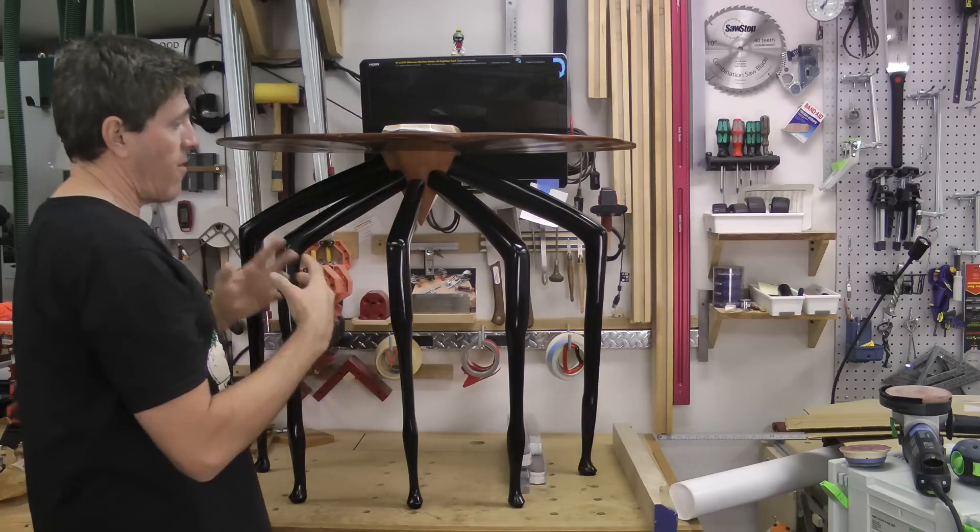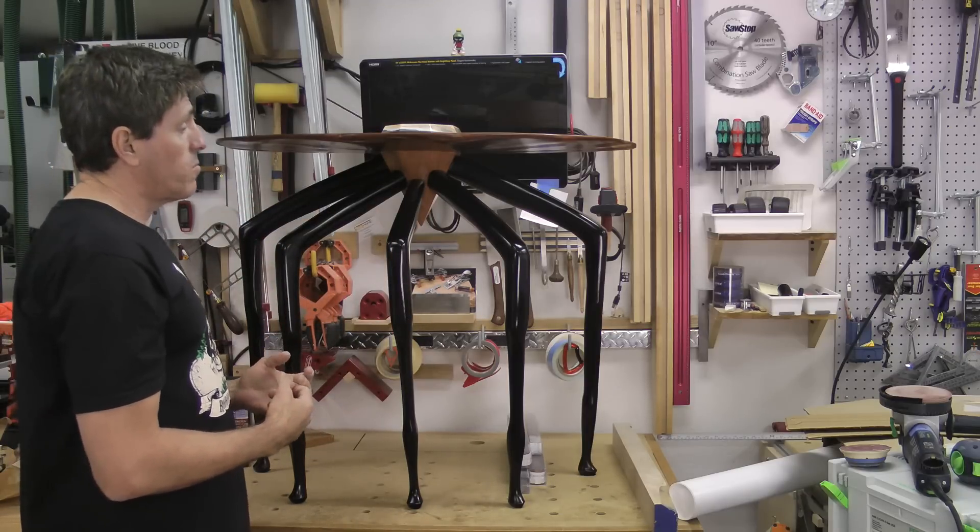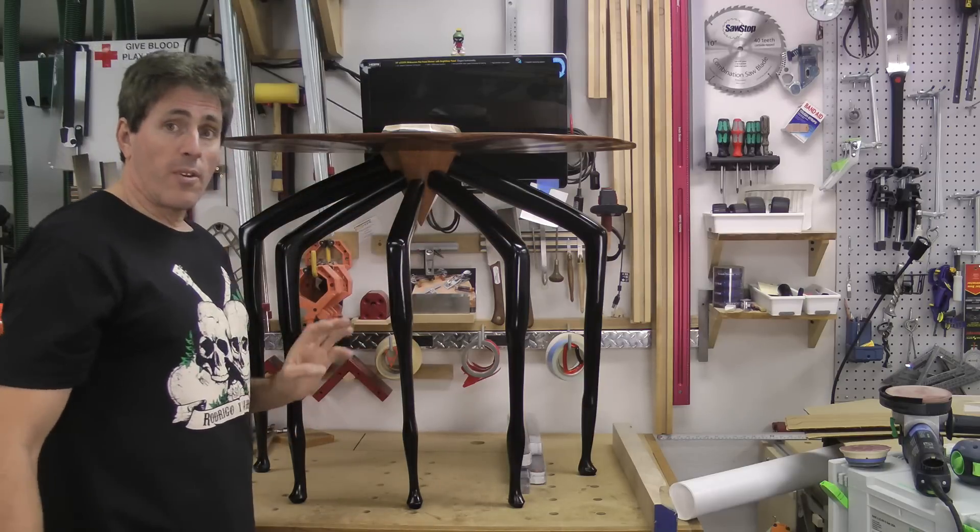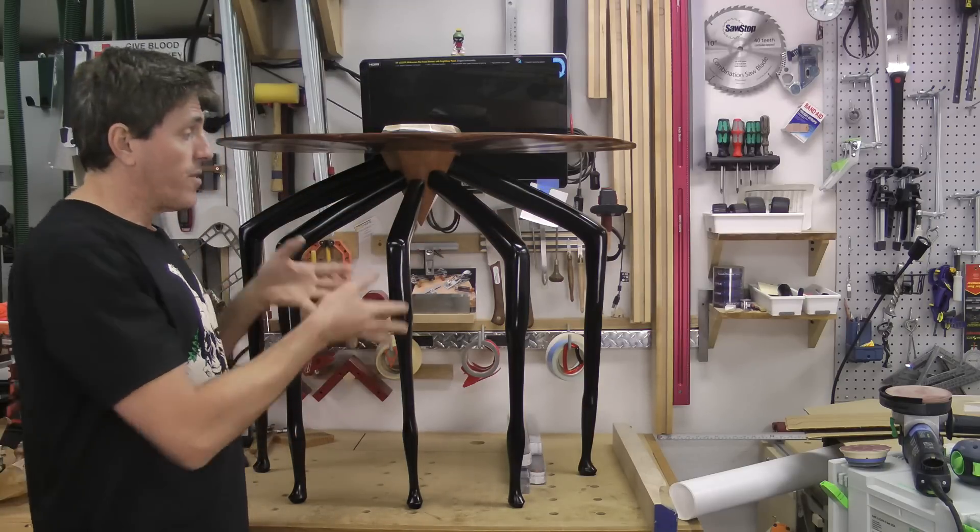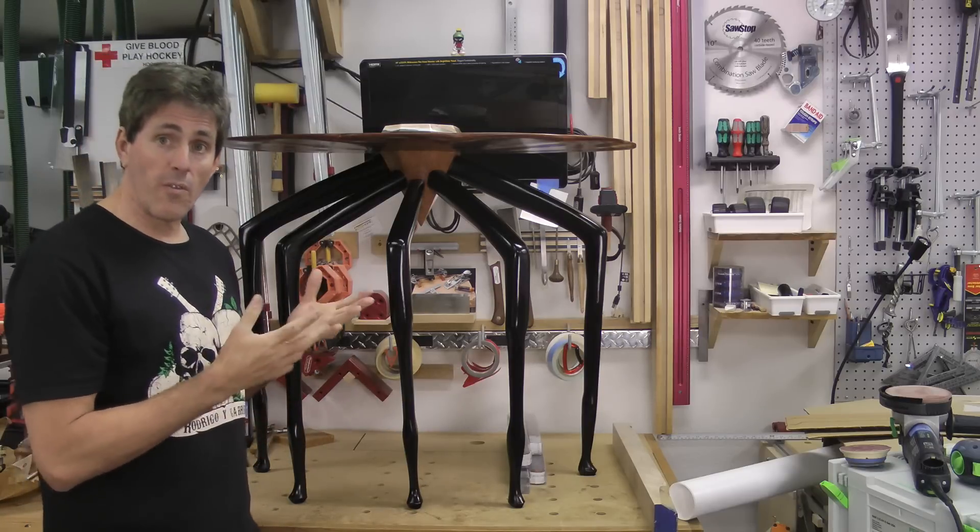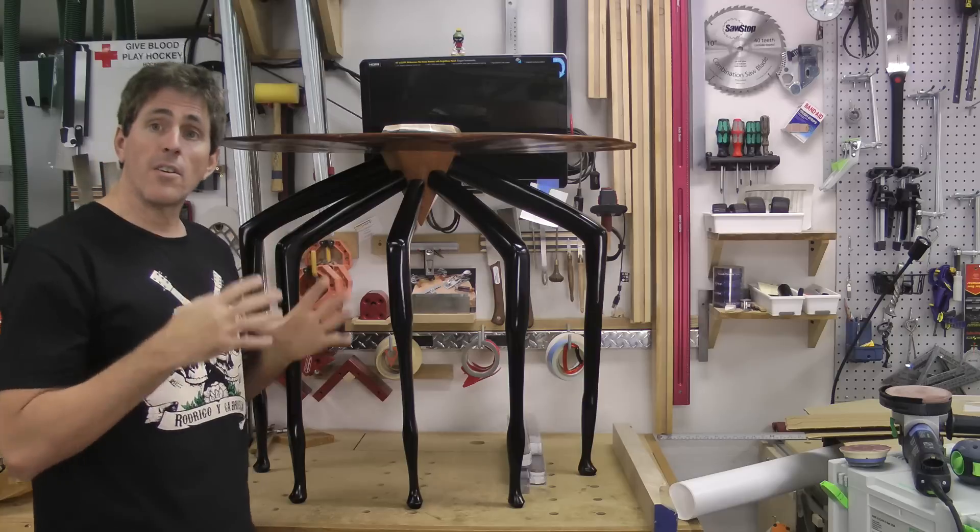So one of the complications of a table like this where you have five legs, especially that are close together like this, is in a normal Demilune, most of them have three legs. Well, three legs is easy. It's just a tripod. It's always going to sit just fine on the floor. All three feet will touch the floor. So you just got to make sure those three feet are going to hold table level and you're done.